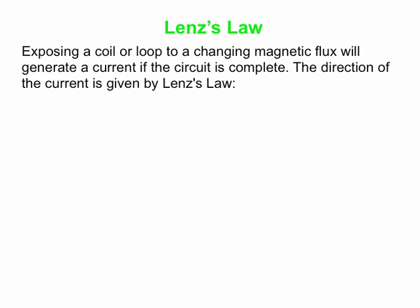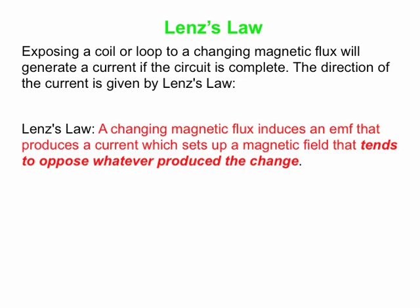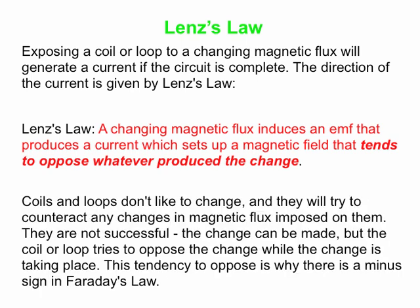There's a whole separate law just to do with the minus sign. Lenz's Law says: a changing magnetic flux induces an EMF — a voltage — that produces a current, which sets up a magnetic field that tends to oppose whatever produced the change. Basically, loops don't like change, and they will try to counteract any changes in magnetic flux that are imposed on them. They are certainly not successful — you can make the change — but the coil or loop tries to oppose the change while the change is taking place.